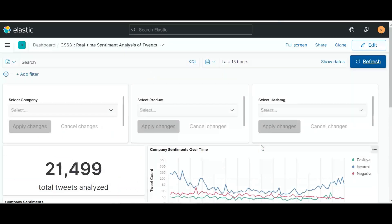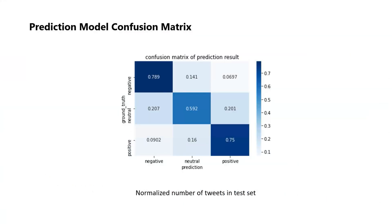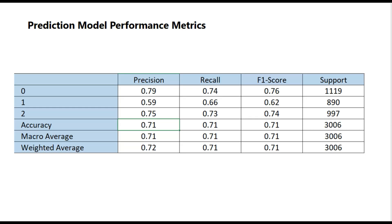For performance evaluation of the prediction model, we are able to detect 78.9% of true negative tweets as actually negative, 59.2% of neutral tweets as neutral, and 75% of true positive tweets as positive. Both precision and recall, and hence the F1 score, for positive and negative sentiment tweets are found to be way better compared to neutral sentiments, which score 76% and 74% F1 score respectively. The overall accuracy of the model comes out to be 71% based on the test set.